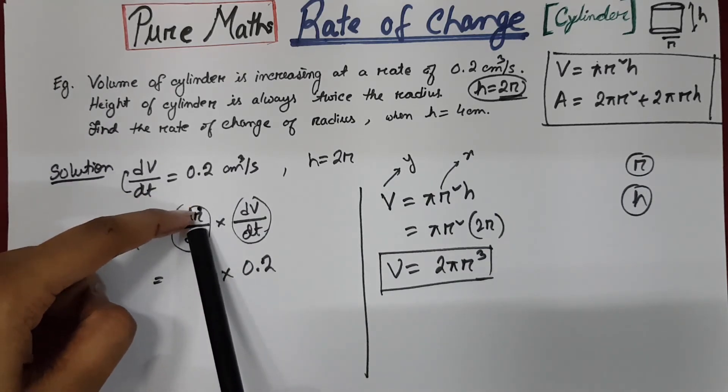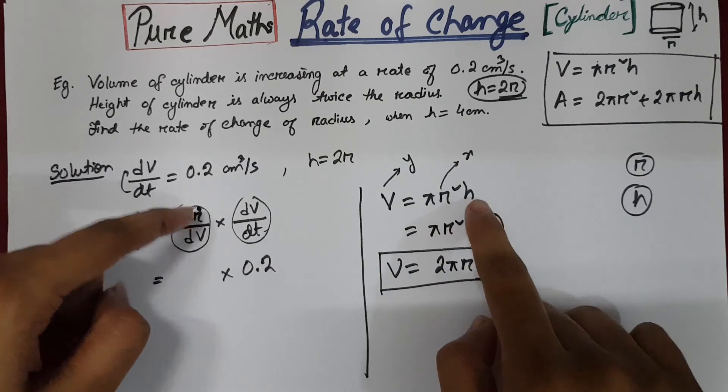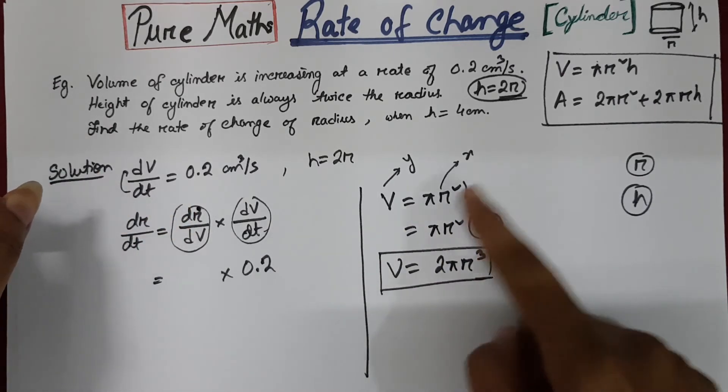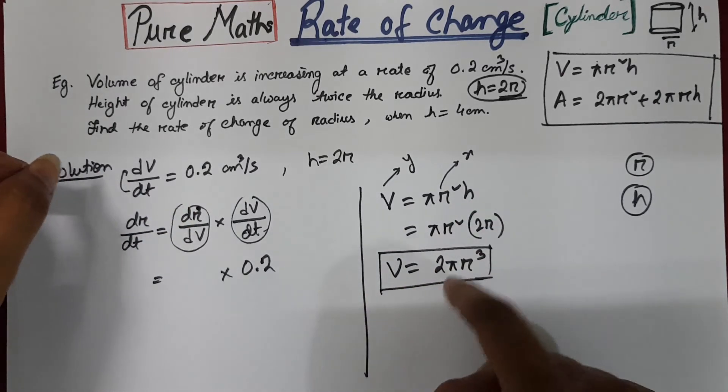I need the radius. So I kept the radius and replaced the height here. So that's how we have got the new equation of volume.